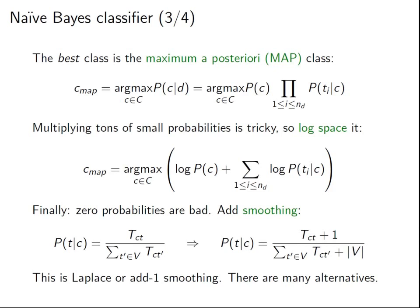Another issue is zero probabilities. If any word never appeared in a class in training, that probability is zero, making the overall probability zero. And in log space, trying to take the log of zero is problematic. One way to handle this is to add smoothing — specifically Laplace smoothing or 'add-one smoothing': you add one to the token count in the numerator, and add V — the vocabulary size — to the denominator to keep everything balanced as probabilities. There's been tons of research into alternative smoothing techniques, but this is a reasonably safe bet.